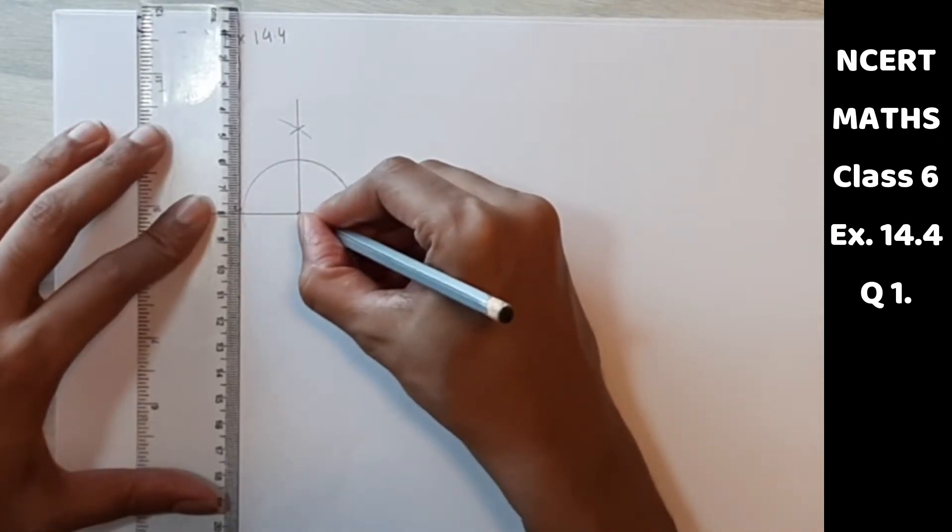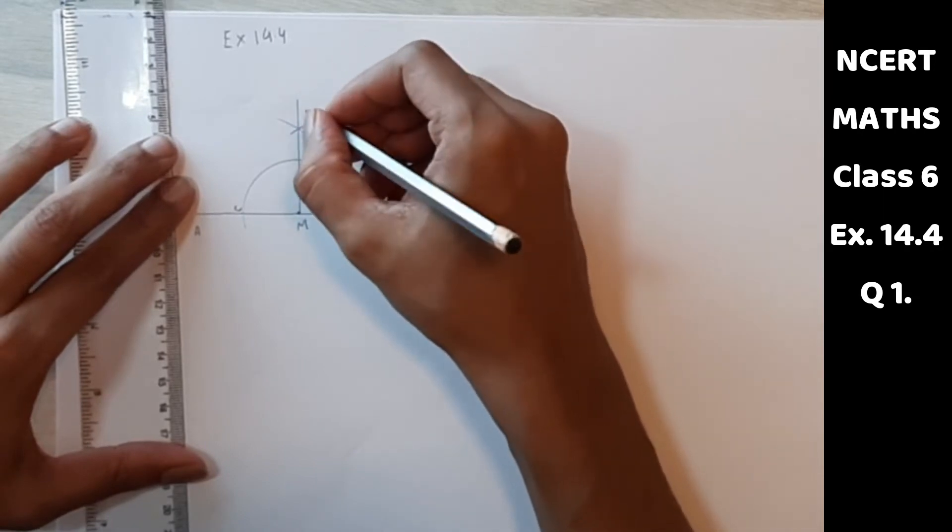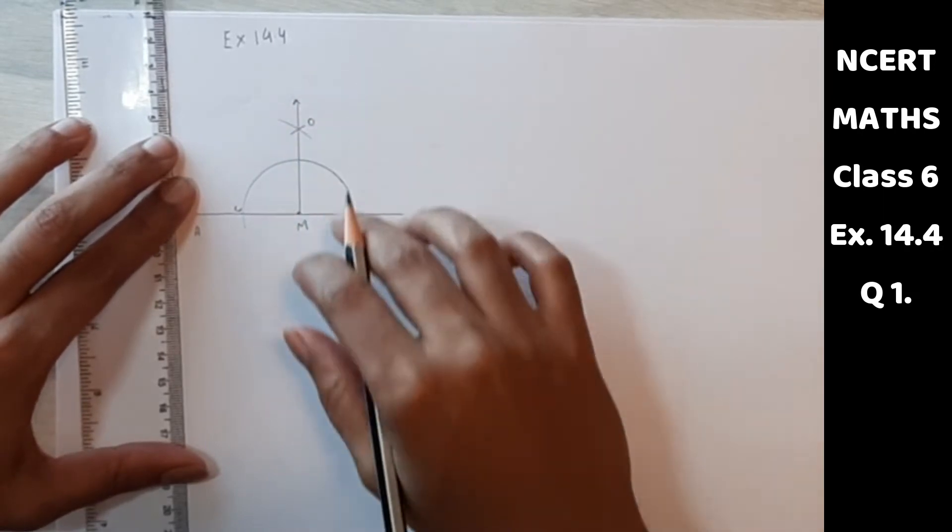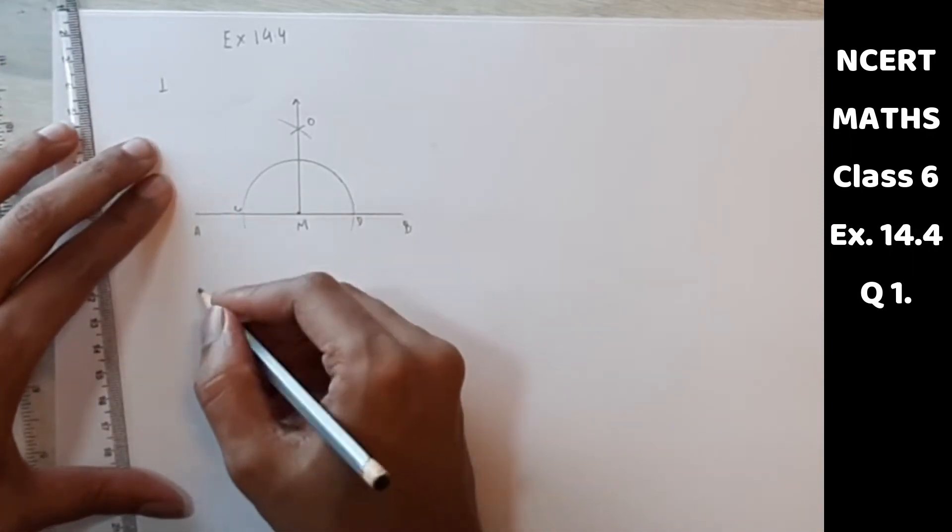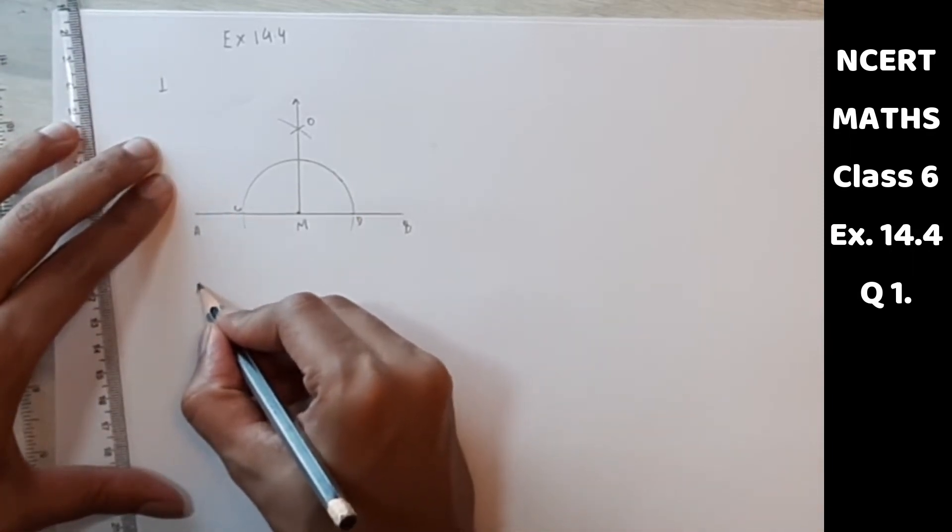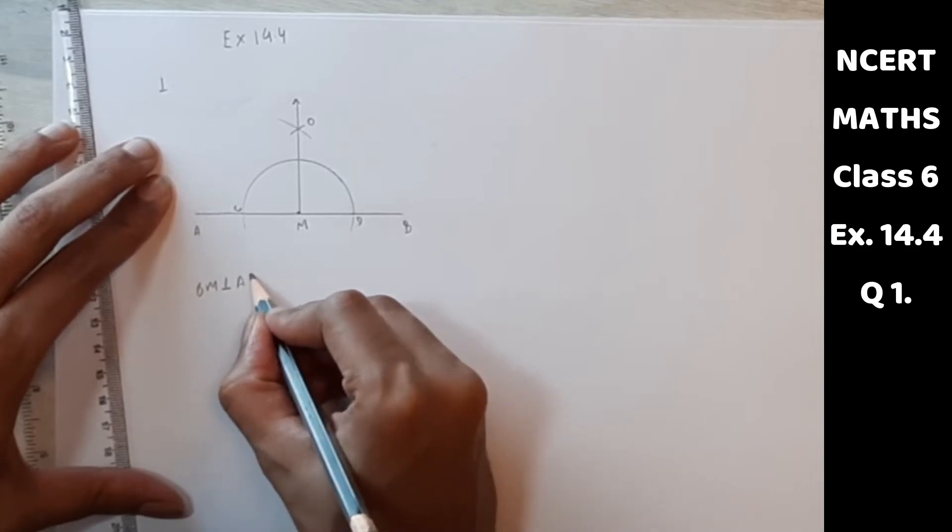So from point M, let's say this is O. This line is perpendicular bisector. So OM is perpendicular to AB.